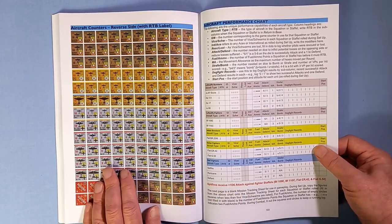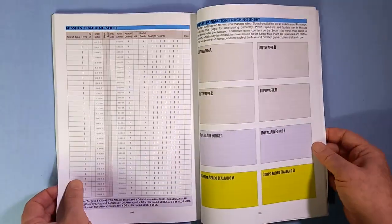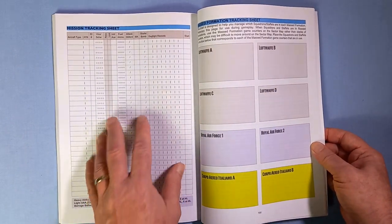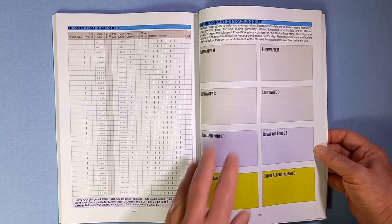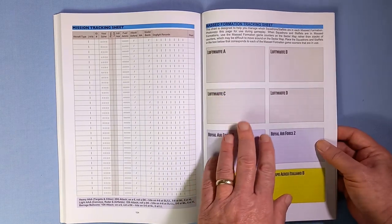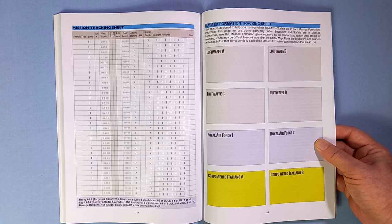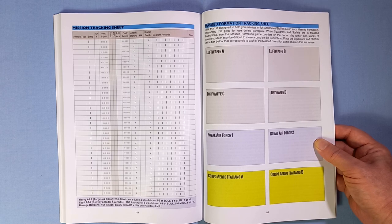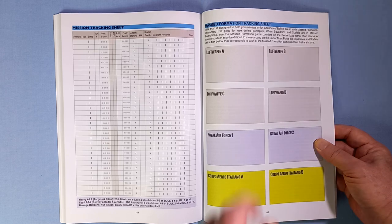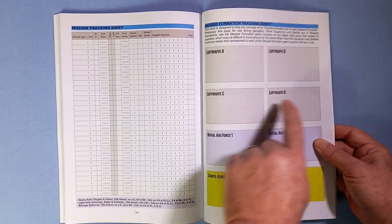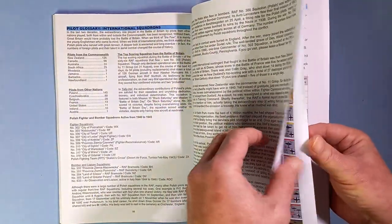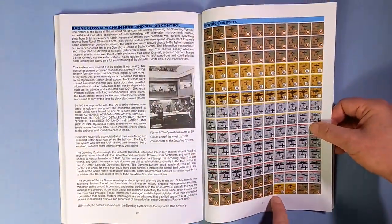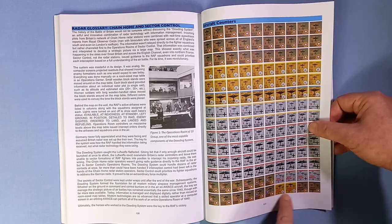Here are the aircraft performance charts, a mission tracking sheet which you'll use for your missions anyway, and a massed formation tracking sheet. As you can imagine, if you've got a few counters stacked up because you've got a massed formation, it might be easier to put them on here and use one of these massed formation counters instead.